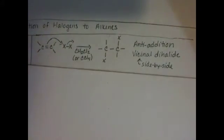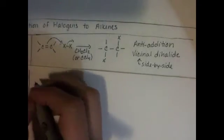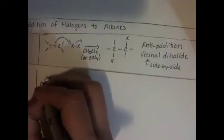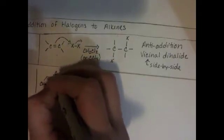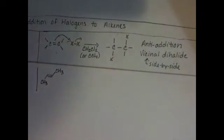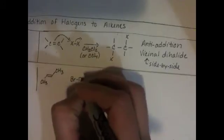So let's do this reaction with an actual molecule and we'll look at the mechanism for it. We are going to start with this alkene, this trans-alkene. And we're going to react it with a Br2 molecule.